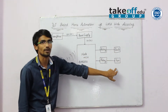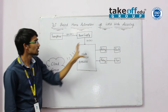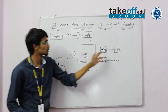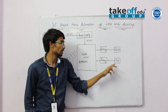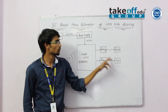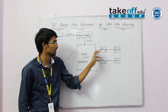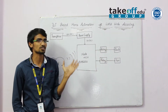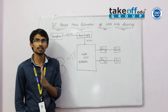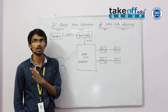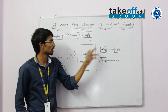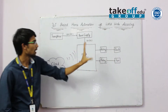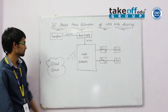The loads are a bulb and a fan. Whenever we give an instruction, the load should turn on and the load should turn off. For that purpose, we are using a URL which will trigger when an instruction is given, and the load will automatically turn on or off.